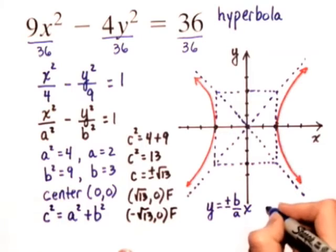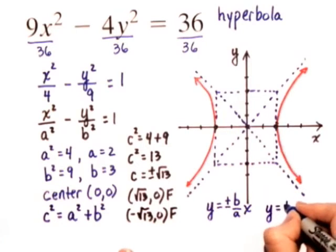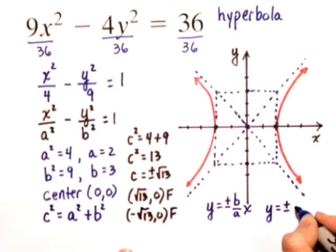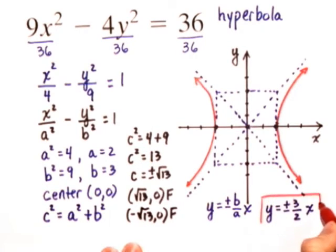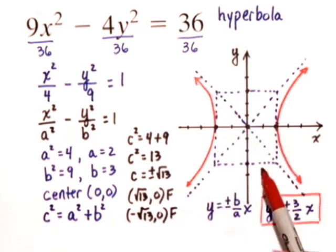So, in our case, we have y is equal to plus or minus b, which is 3, over a, which is 2x. So, I'm going to highlight the information that we have. y is equal to plus or minus 3 over 2x are the equations for the two asymptotes, these two diagonals that I drew through here.